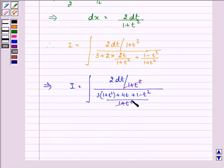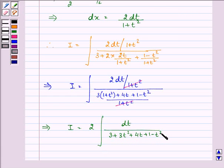1 plus t square will get cancelled out and we are left with I equal to let us take out this 2 which is a constant out of the integral we have dt upon 3 plus 3t square plus 4t plus 1 minus t square.